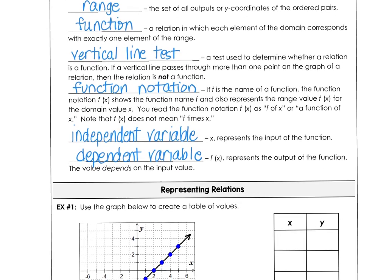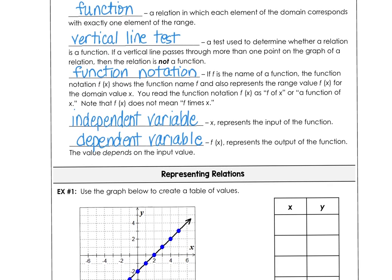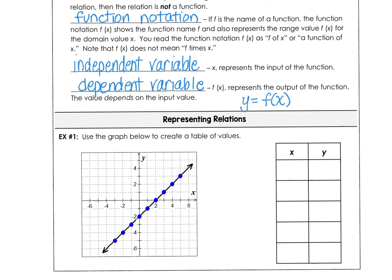And then you should know that the independent variable is the x value. It's the input of the function. And the dependent variable, that's the output of the function, or the y value, because the y value depends on your choice for x. So we could say the y value is the function value at some given x. So let's jump into the lesson.